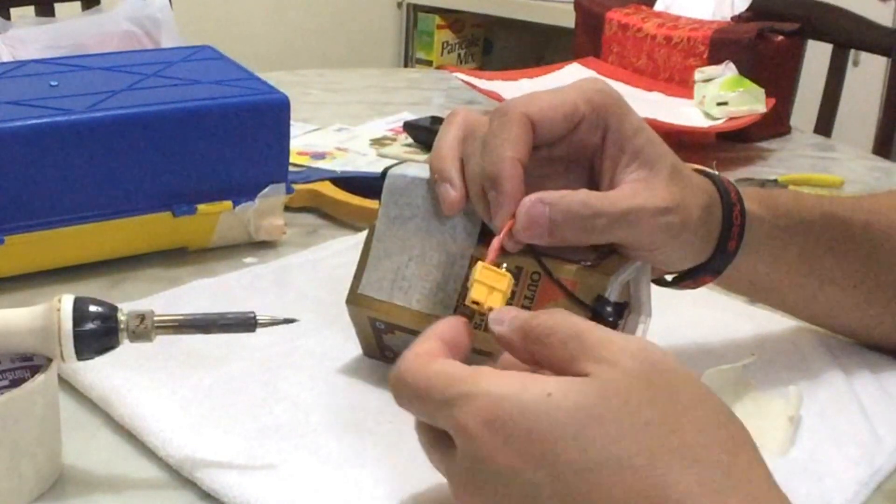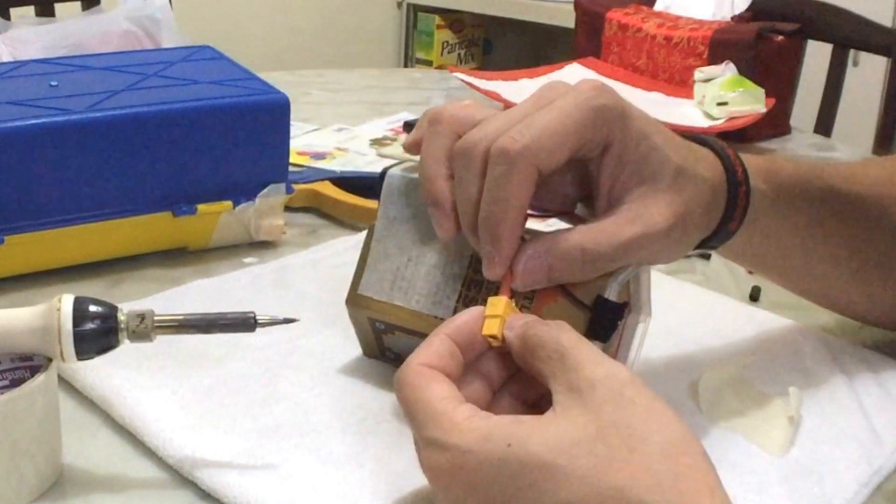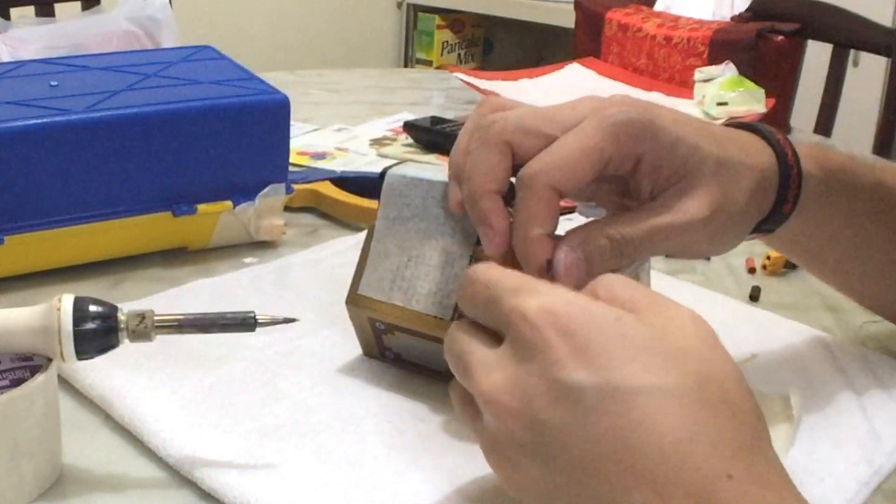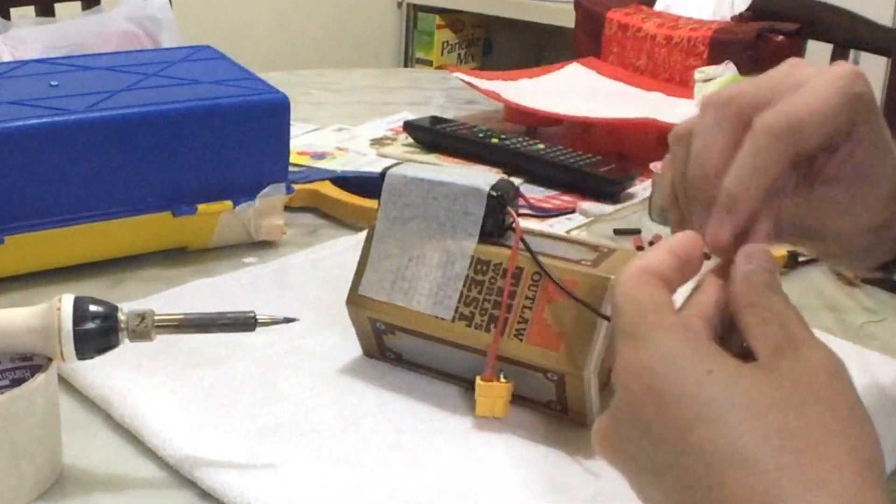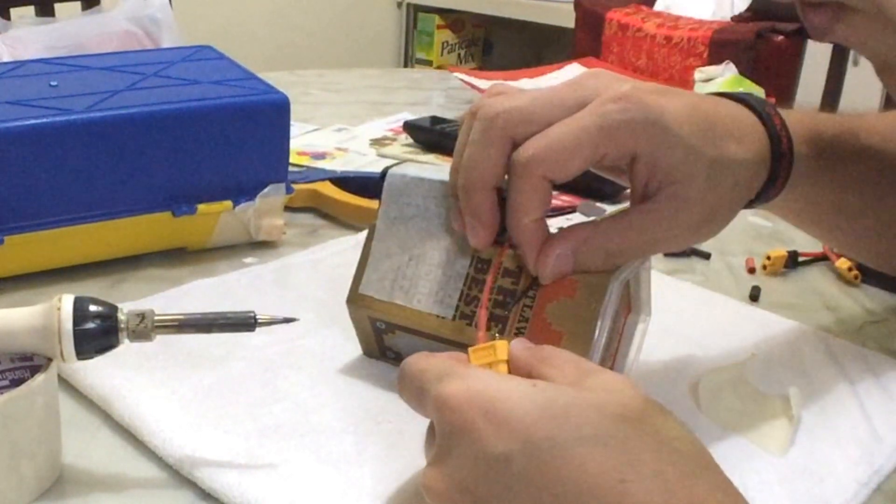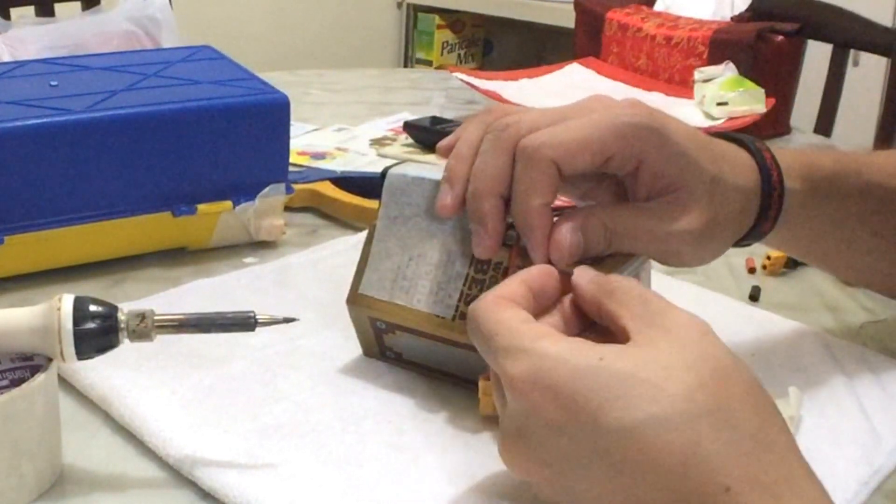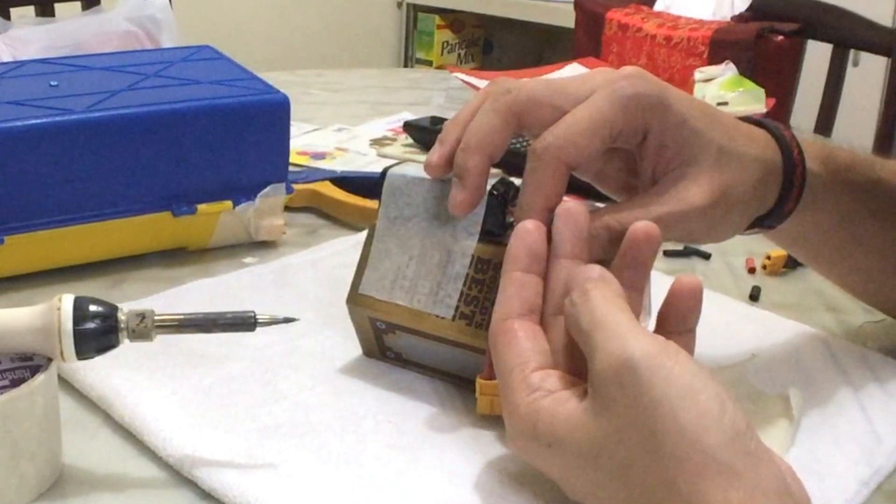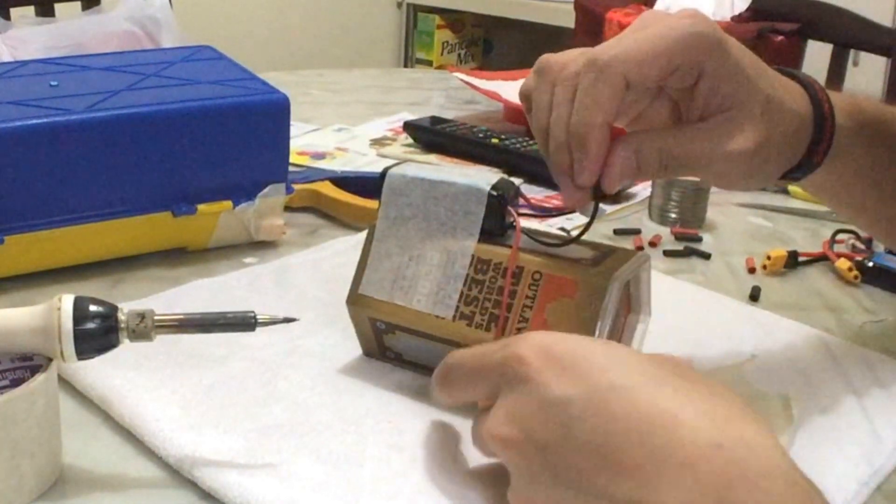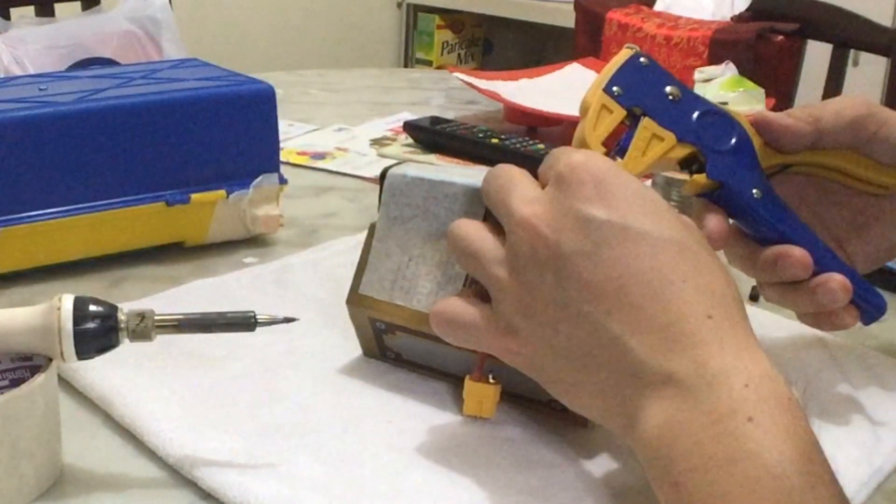Now that we're done with the positive lead, only after you've used the shrink wrap, then you're going to work on the negative lead. So then we're going to take this out because that means it's more safe and it runs a lot less risk of you actually shorting the whole thing together. So now we're going to repeat the whole process of stripping the wires, coiling it, adding flux, and then fusing these two together. So strip the wire.